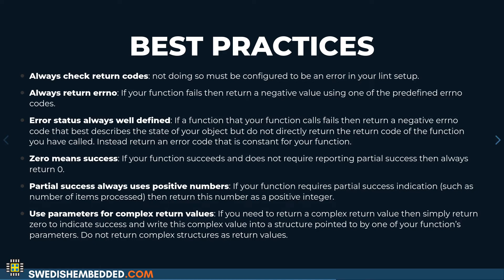You can return a positive value if there was partial success. You can also use parameters for complex return values — if you have a function that returns a complex data structure, you never return that as the return value. Instead, you return a status code and place the actual data you're retrieving into one of the parameters passed to the function.